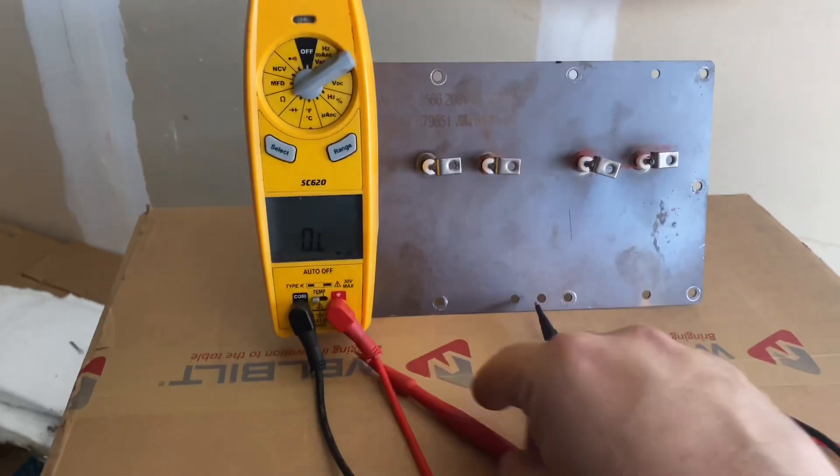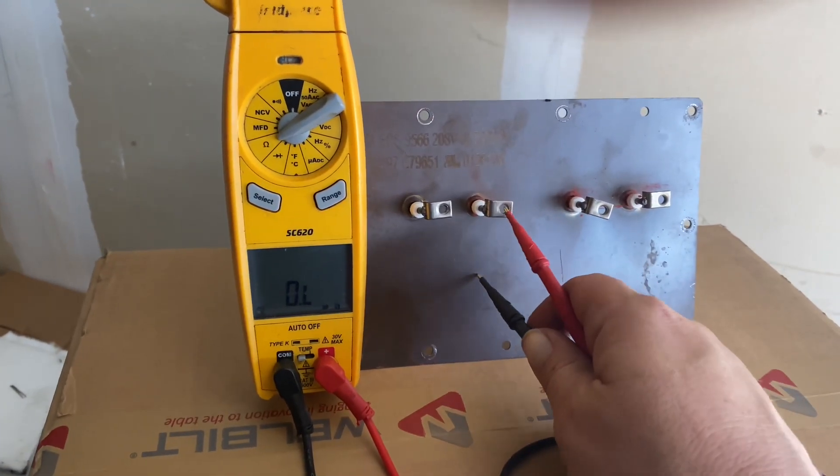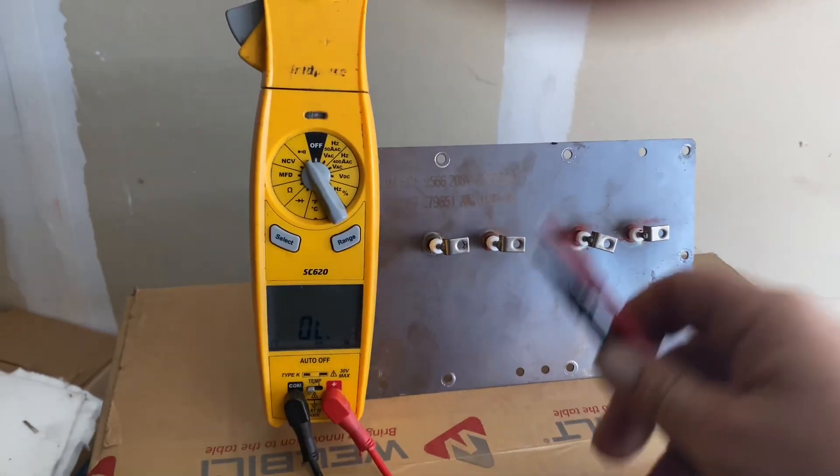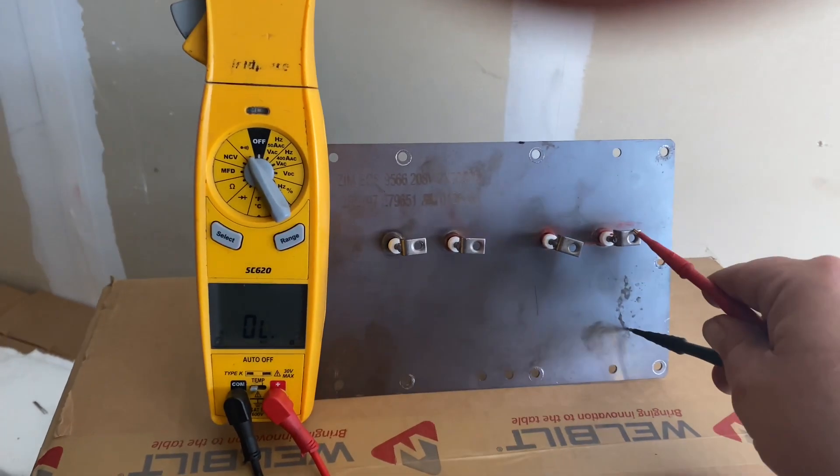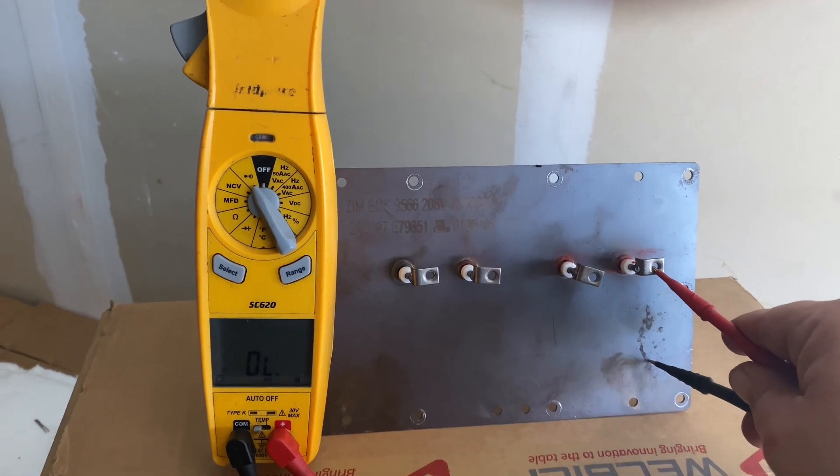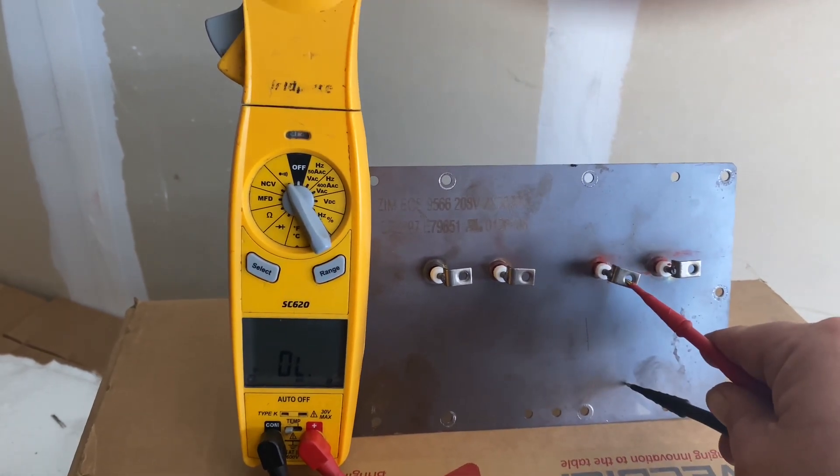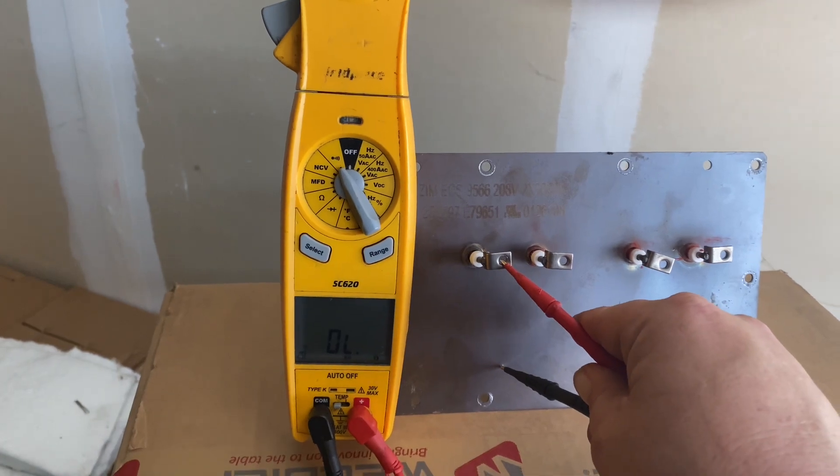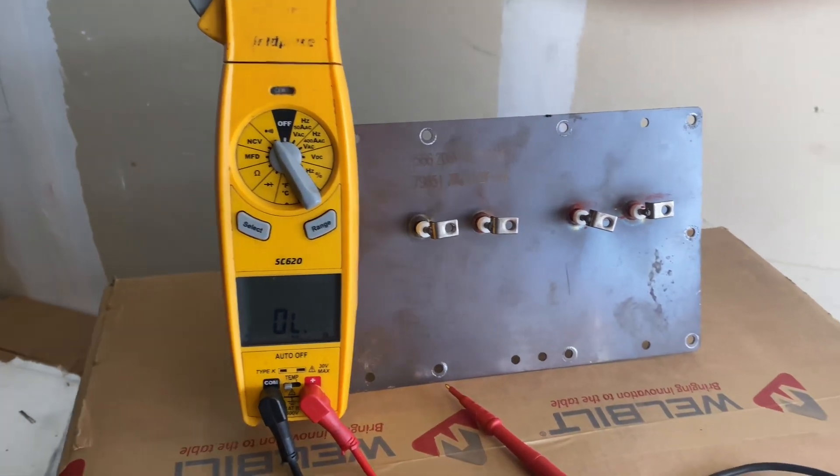Another way that you would test it would be to go from ground. You've got to put your meter back to continuity. Basically you want to take each one and go to ground, make sure it's closed. Okay, no beep, that passes the test. But you want to make sure that you do all of these tests just to confirm what the problem is.